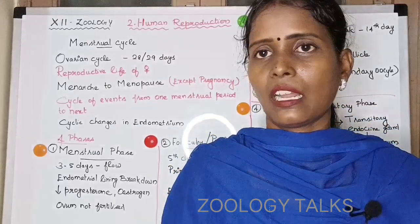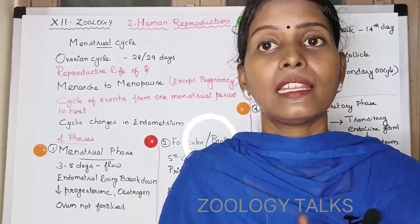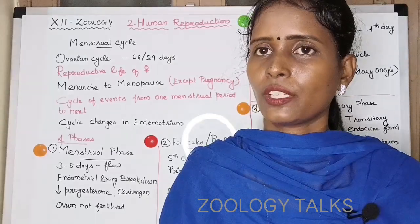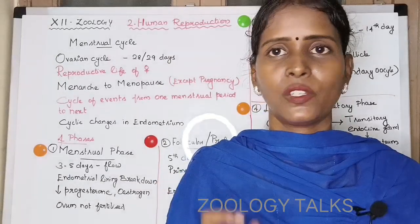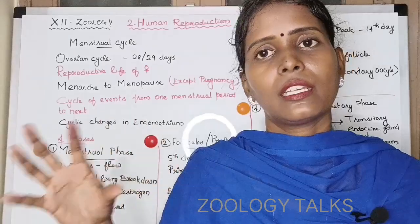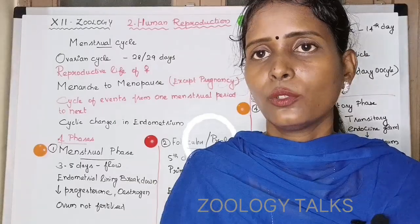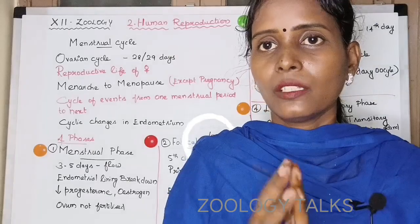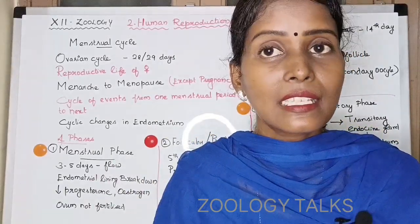During this phase, two gonadotrophins are involved: LH, which is Luteinizing Hormone, and FSH, which is Follicle Stimulating Hormone. FSH stimulates the primary follicle to mature into the Graafian follicle. LH helps develop the uterine endometrium. Once the Graafian follicle forms, the follicle cells produce estrogen.